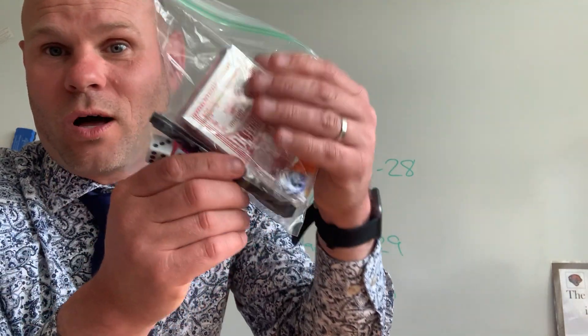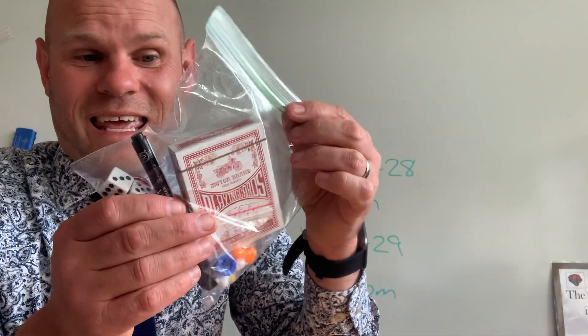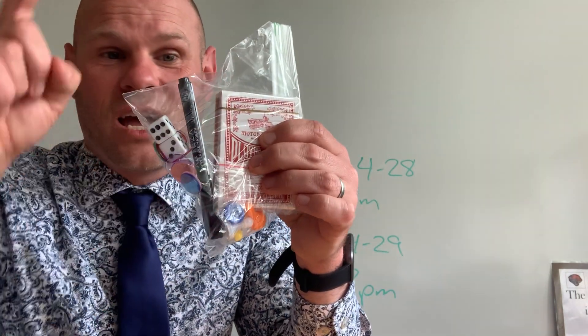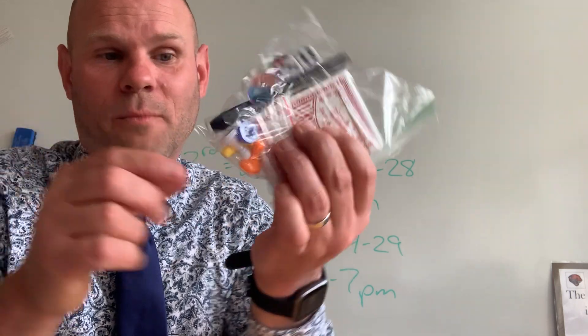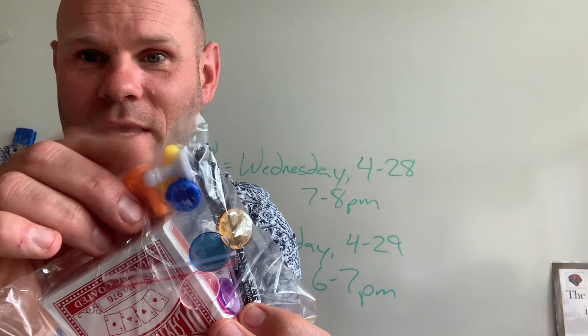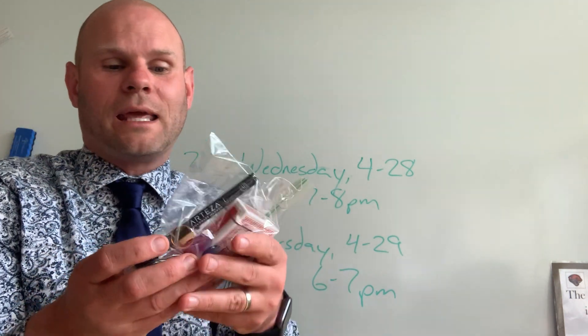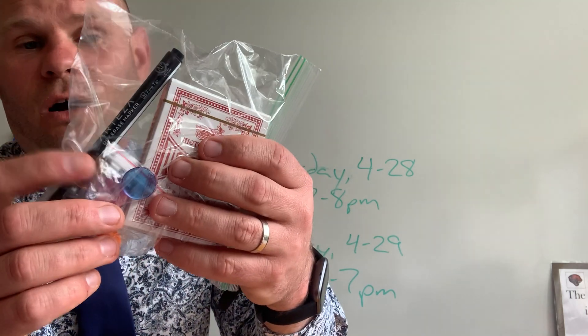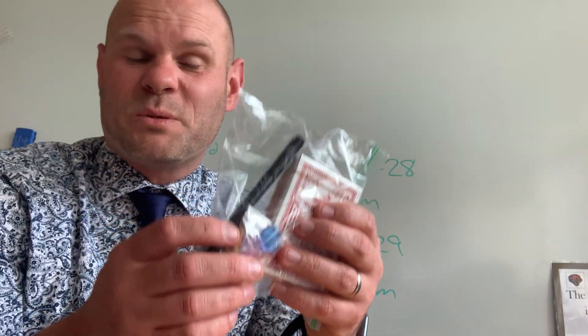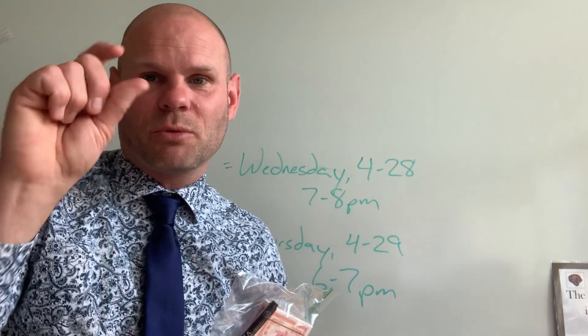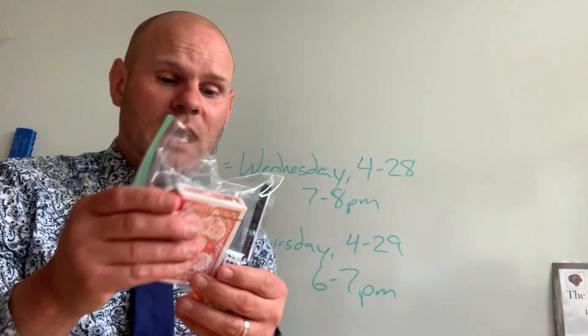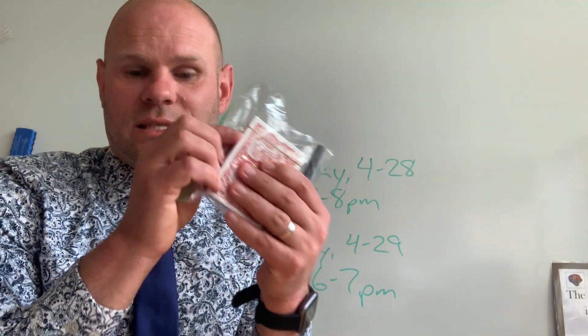But every single student will also get a little packet like this in it. It has a deck of cards, a dry erase marker, four little game pieces. Some of the games you might need to move on a game board. And then we have also some different chips. Maybe it's a bingo type game or something like that where you need to cover up. So each student will have all of these in there.